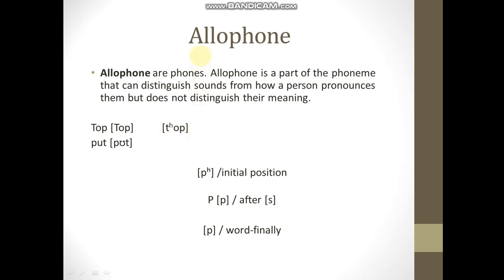Next: allophones. Allophones are phones, but an allophone is a variant of a phoneme that can sound distinct depending on how a person pronounces it, without distinguishing meaning. For example, the word 'top' — it is pronounced with aspiration, indicated by a superscript h. So we describe the aspirated P as an allophone. If you say 'top' without aspiration, you do not get a new word or a new meaning, because the aspirated and unaspirated P are not two different phonemes.